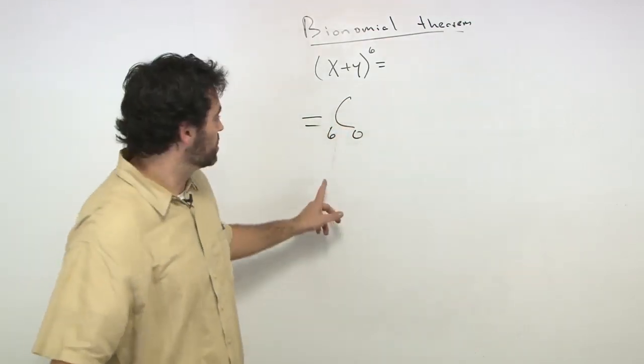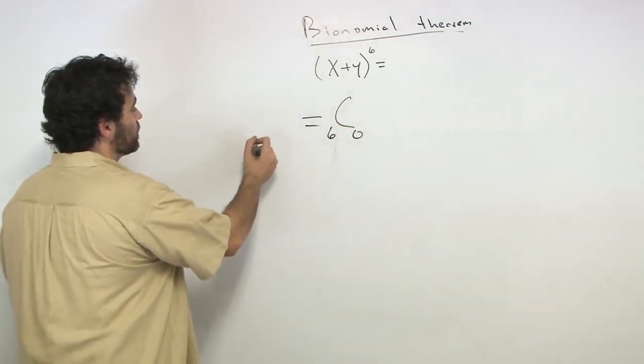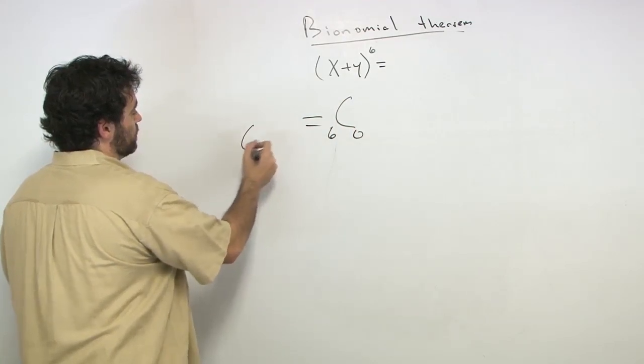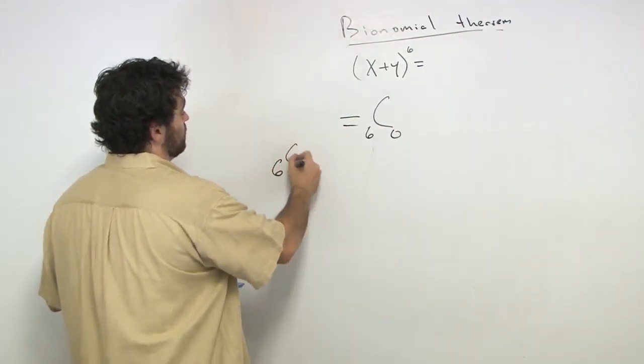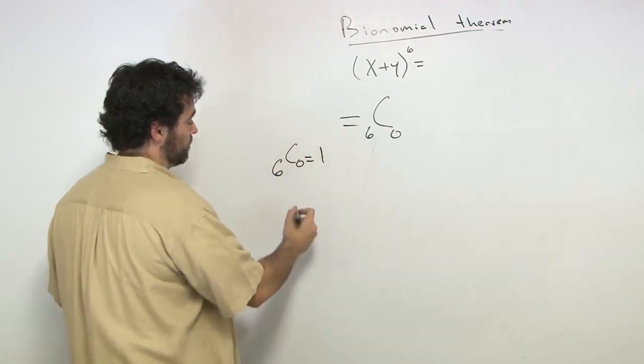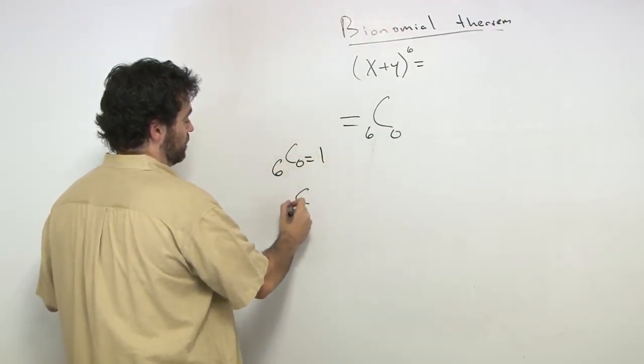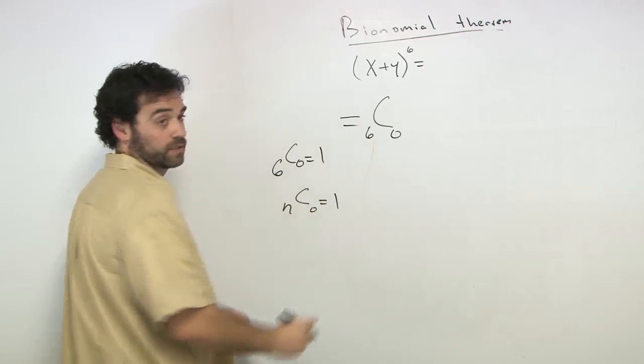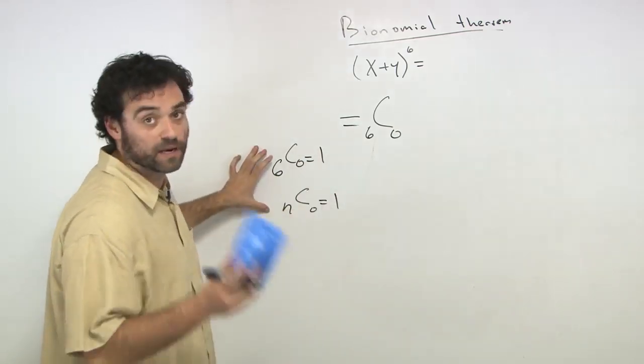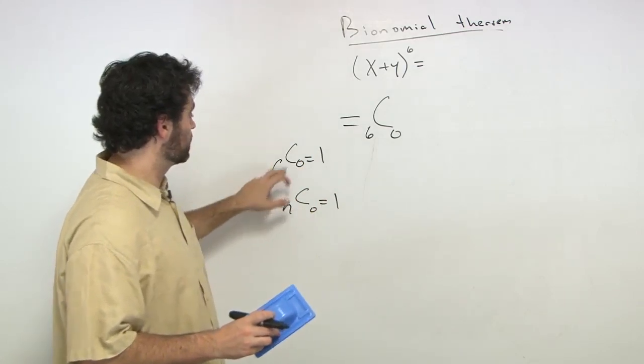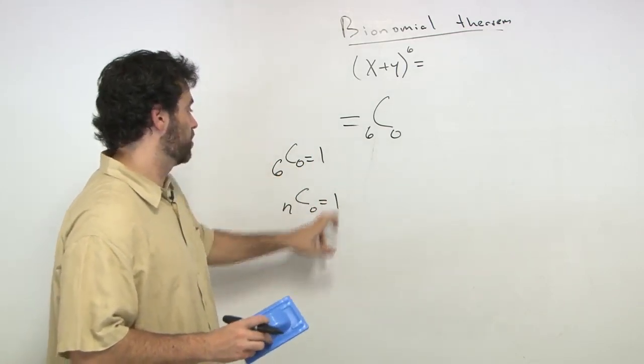We haven't done the 0, but remember, if you work this out, 6c0 is equal to 1. Same thing as nc0 equals 1. Same idea with the factorial, so just remember that's going to give us 1. But know that's an important fact, that 6c0 is 1, the same as nc0 is 1.